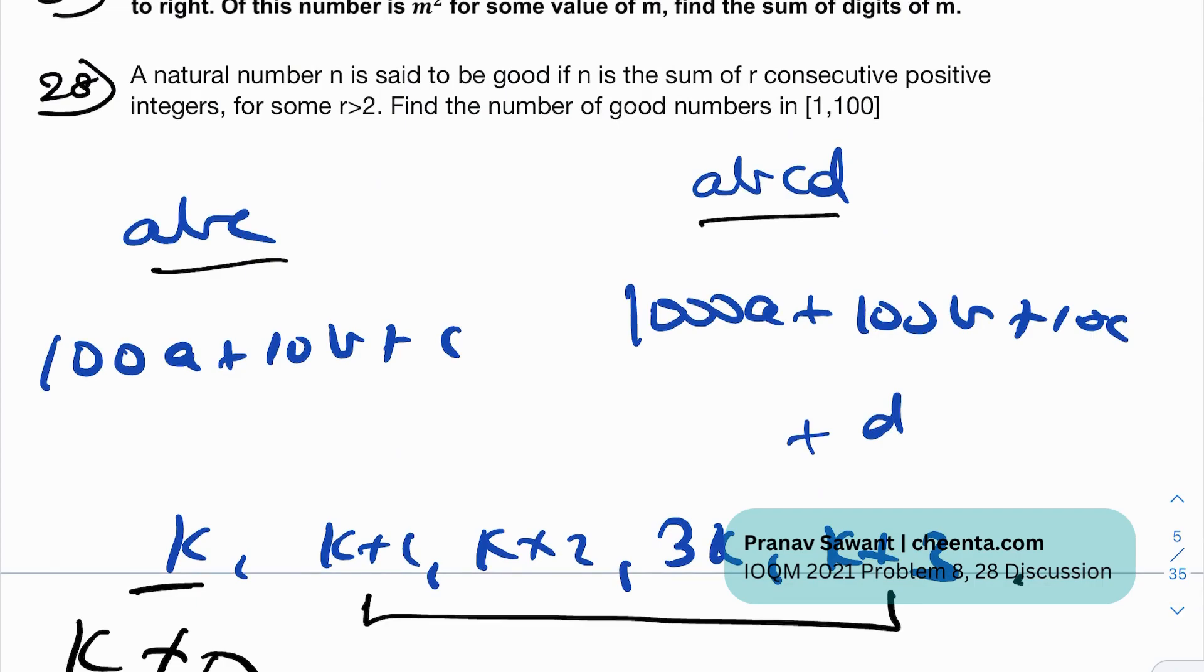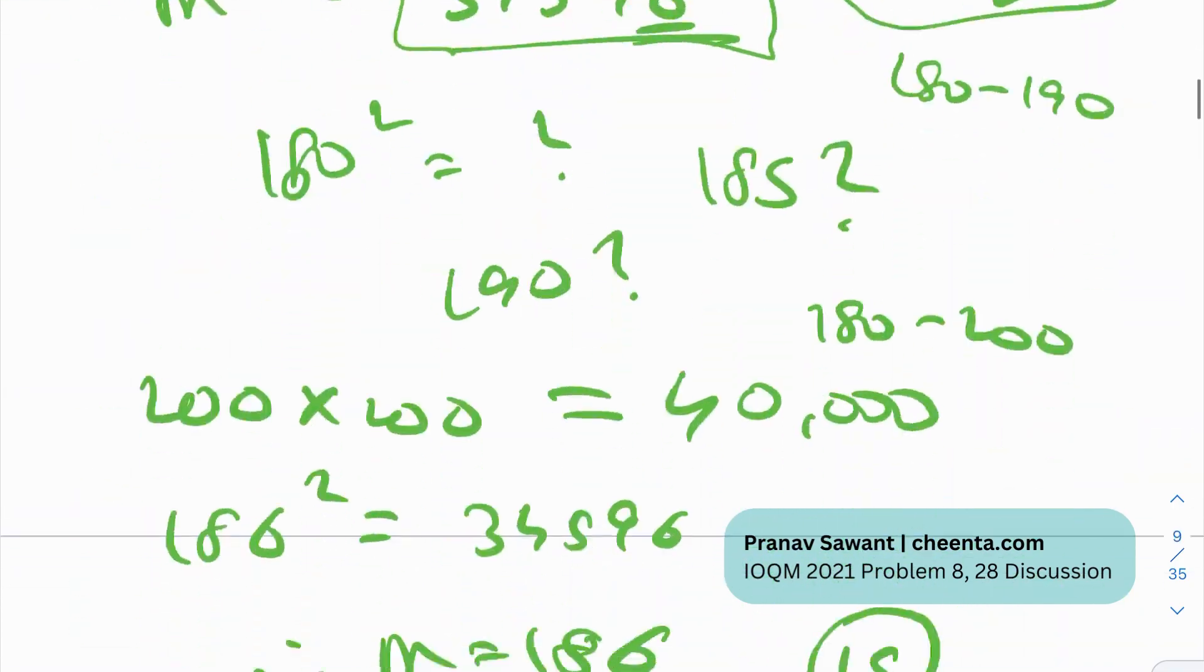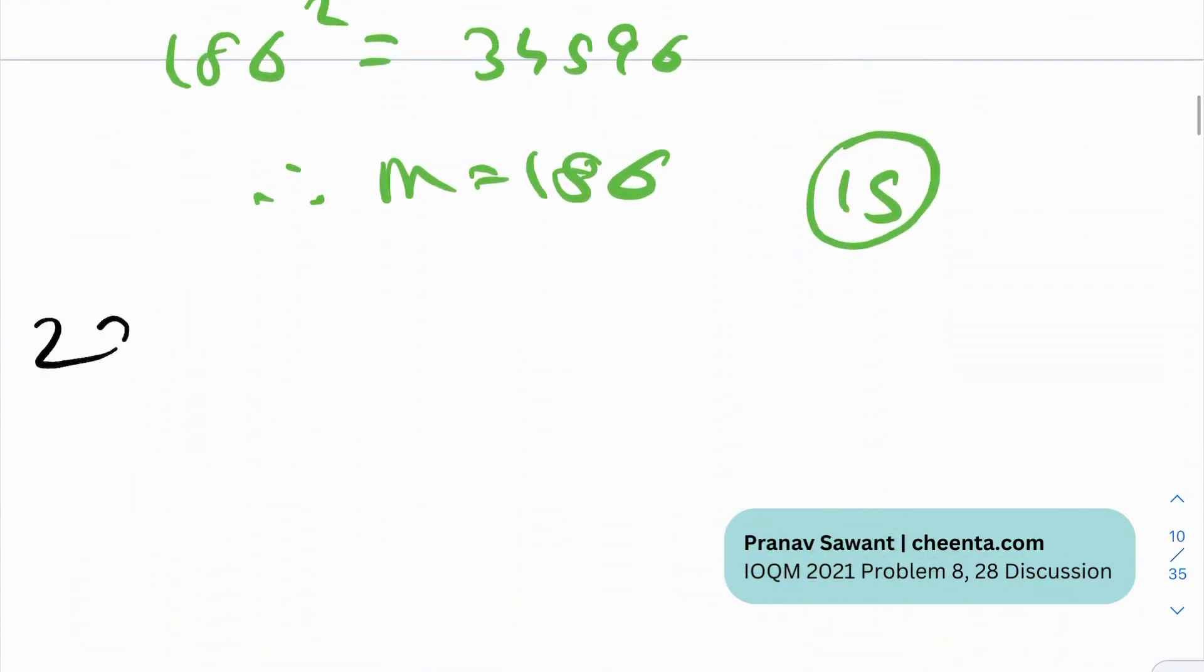The second problem is actually a little bit good. It's the 28th problem. So it's near the end of the test. And a natural number N is said to be good if N is the sum of R consecutive positive integers for some R greater than 2. And we have to find the number of good numbers in this given set 1 to 100. So what's it saying? So it's saying if any number N can be written as a sum of, let's say, R consecutive numbers, so 2 plus 3 plus 4, so N is equal to 9 is a good number. It's a good number. It can be written as the sum of R consecutive numbers.